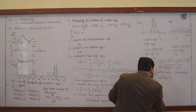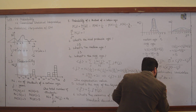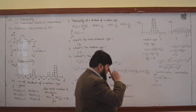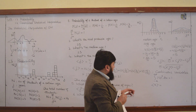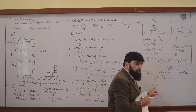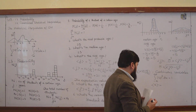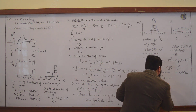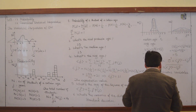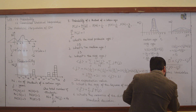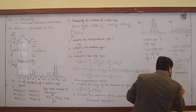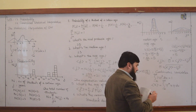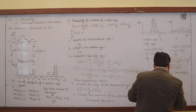And we can find the expectation value, or the average value. In quantum mechanics we call this the expectation value. If x is our space variable — the displacement — then I will write from minus infinity to plus infinity, and this will be equal to ψ* x ψ dx.